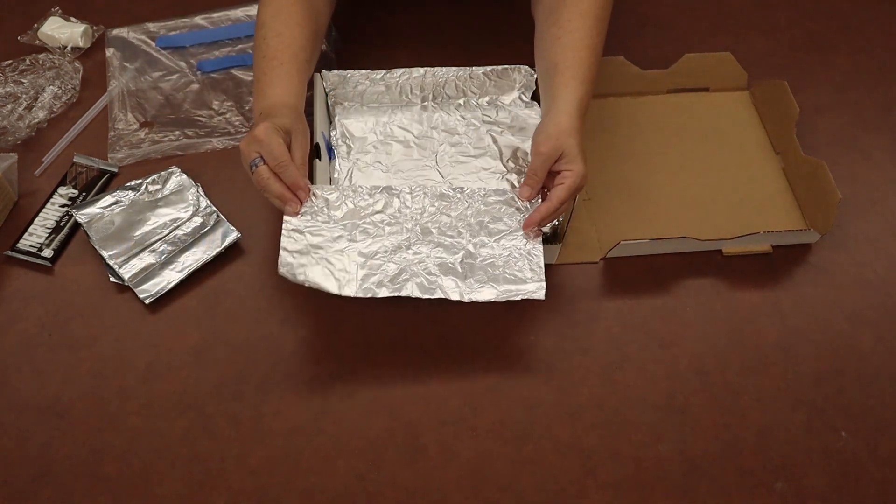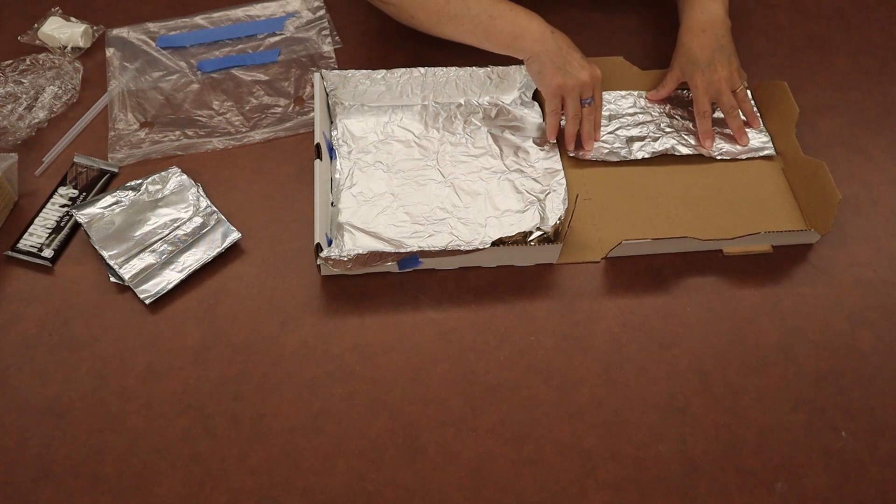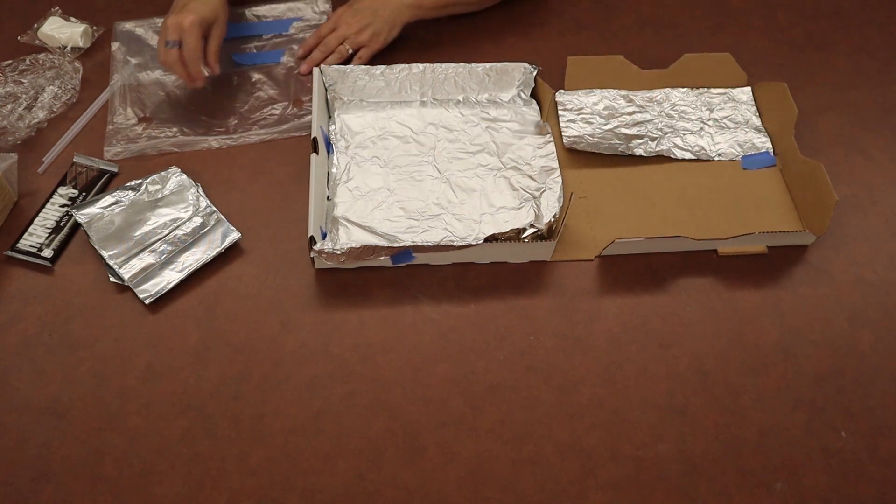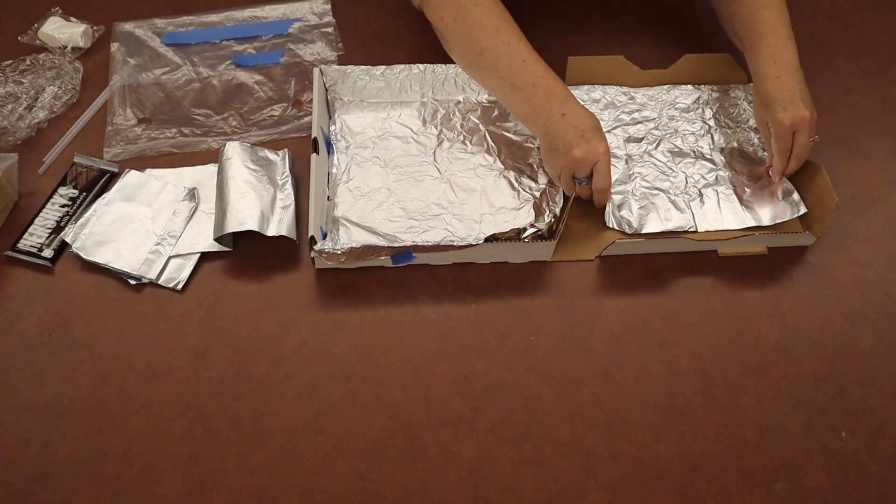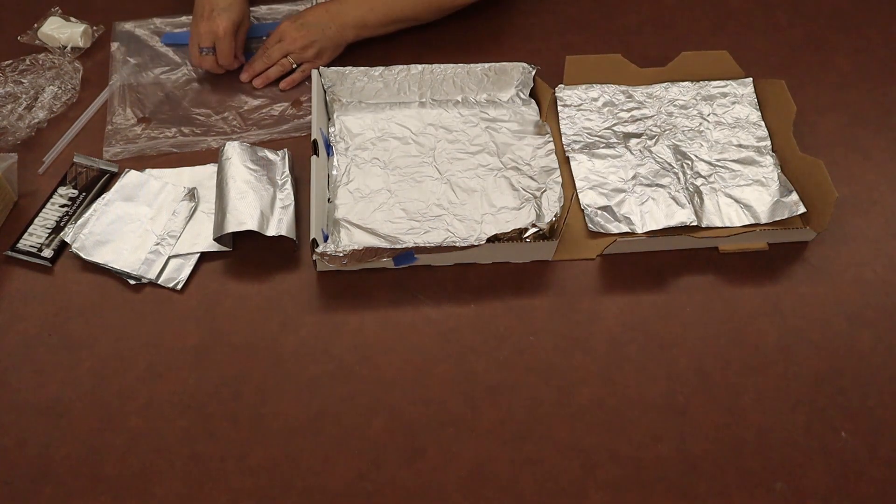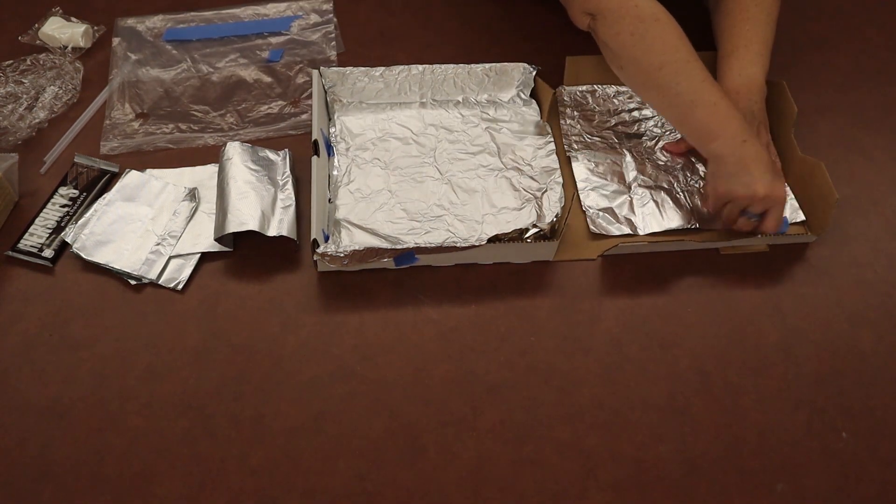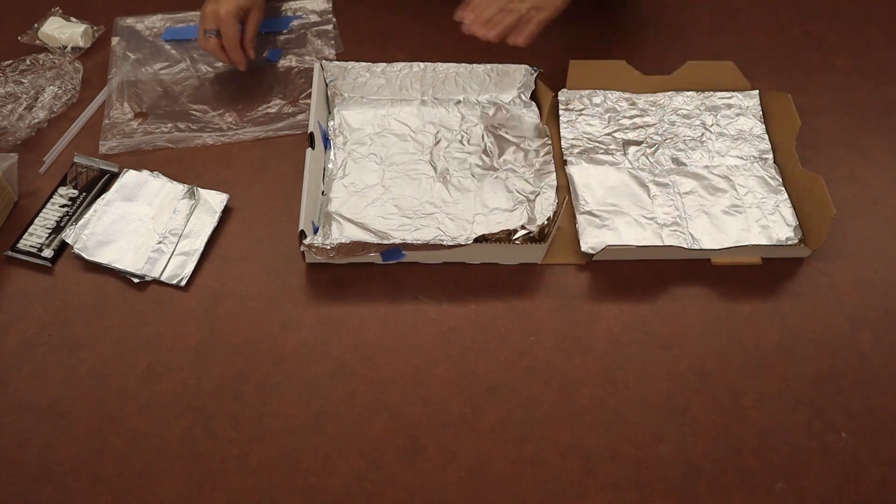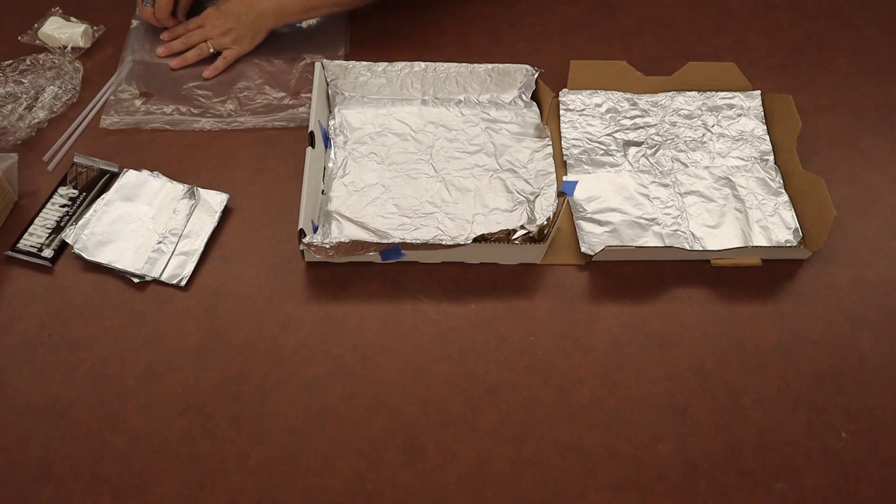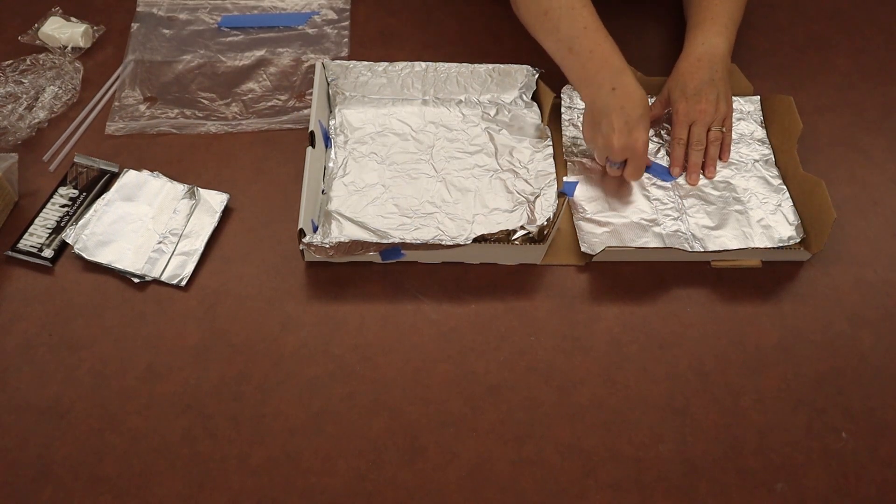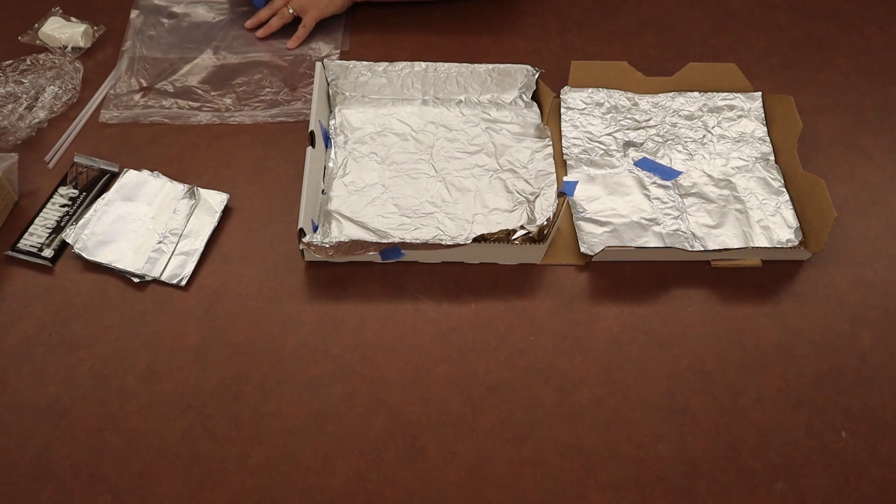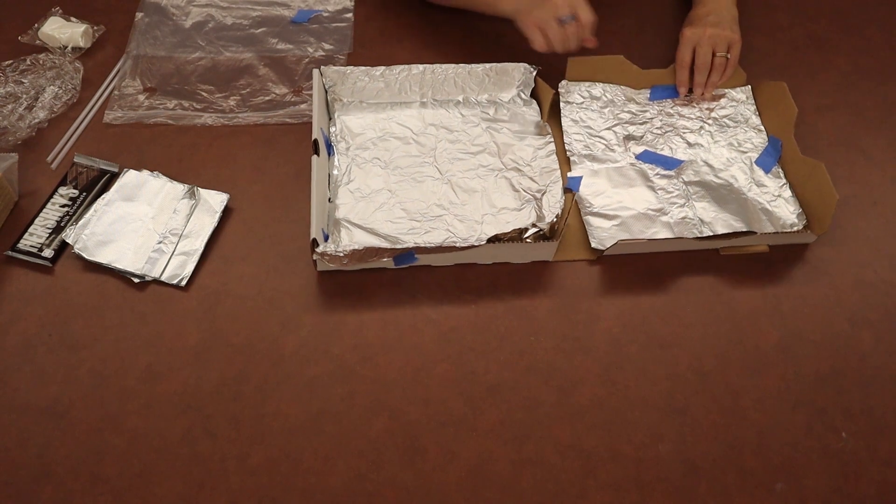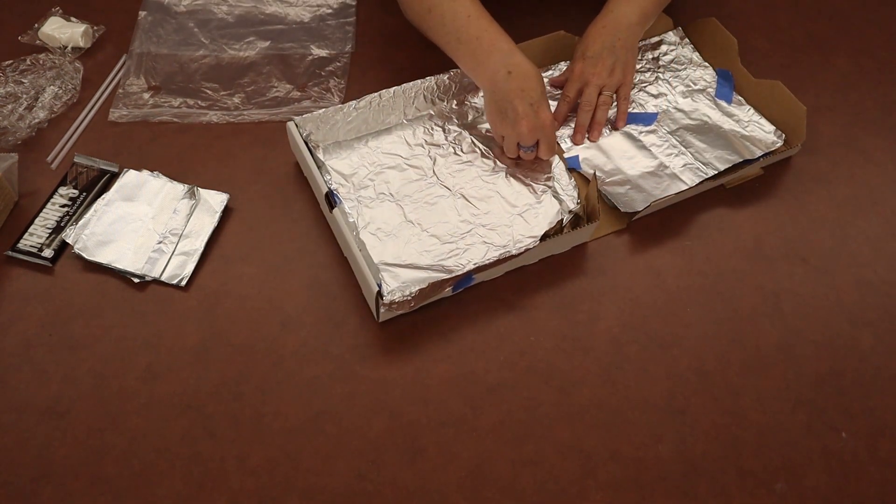If you have the smaller pieces of foil, it's the same basic thing. Just take them, put them on the inside, and tape them down. Once you have your foil secured, we're ready for the next step.